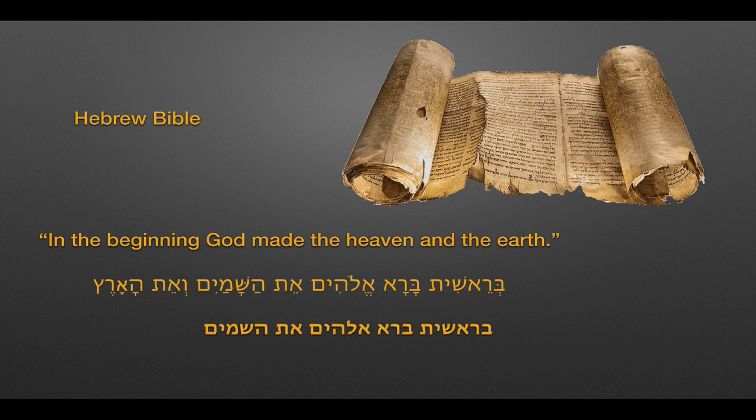Hebrew is originally written without vowel pointing, so that's an entirely consonantal text. The little dots are the vowels, which were added at a later date to clarify how to vocalize the text — how to pronounce it. That will become an important part of the story in a little bit.